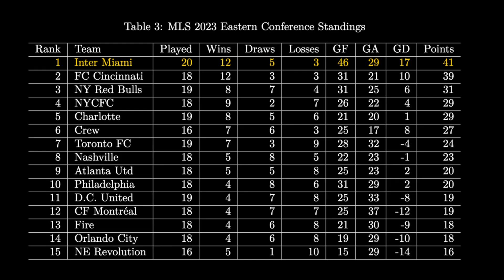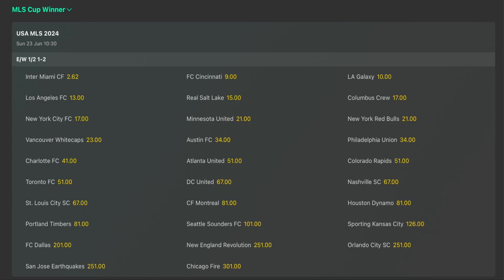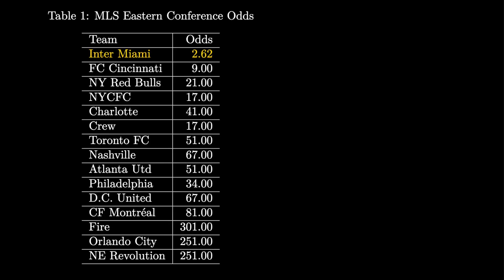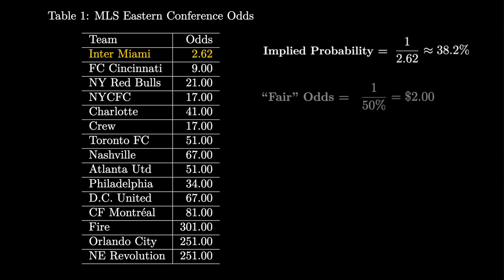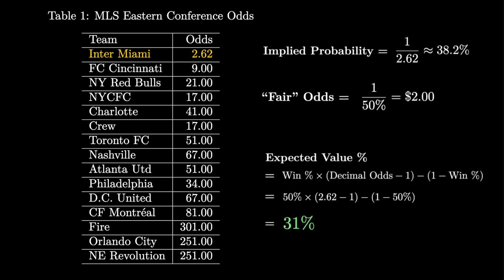Right now the MLS is about halfway through their season and Messi's Inter Miami are sitting first in their conference. Bet365 have them as clear favourites to win the MLS Cup at $2.62. This is an example of a futures market — an event happening in the future. Whenever you place a bet you want to be sure that it has a positive expected value. Miami is priced at $2.62, which implies a probability of 38.2%. If you learn that the event is actually 50% likely to occur, then fair decimal odds would be $2. A bookmaker offering $2.62 would give you a positive expected value, meaning that in the long term you're expected to profit from the bet.